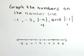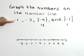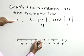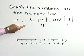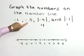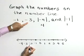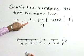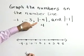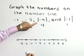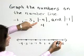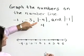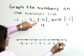Now we're ready to graph. Negative 1 is located 1 unit to the left of 0 on the number line. Negative 3 is located 3 units to the left of 0 on the number line. The absolute value of negative 4, or 4, is located 4 units to the right of 0 on the number line.